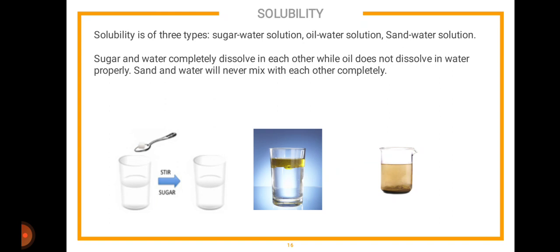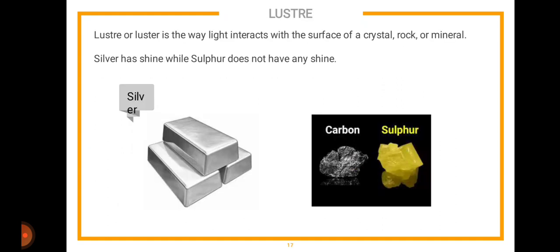Solubility is of three types. In a sugar-water solution, sugar mixes completely with water. In an oil-water solution, oil is less dense than water, so it sits on the upper side while water remains below, as seen in the diagram. In a sand-water solution, sand never mixes completely and settles at the bottom of the glass. That is solubility.